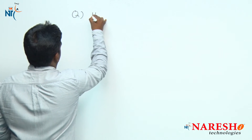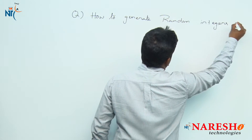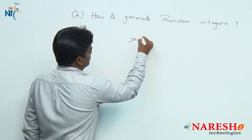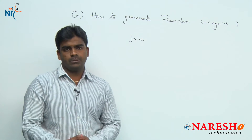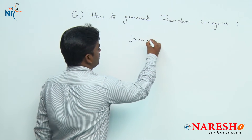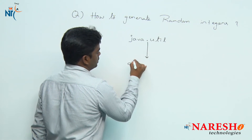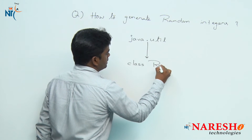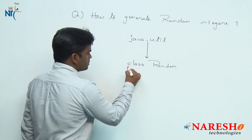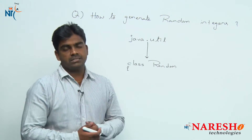The question is: how to generate random integers? In the Java API, we know that a library is a collection of packages and a package is a collection of classes. In the util package, there is a class called the Random class. In the Random class, two methods are available to generate random integer values.